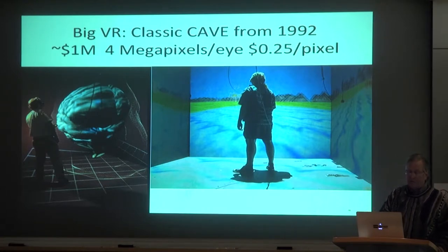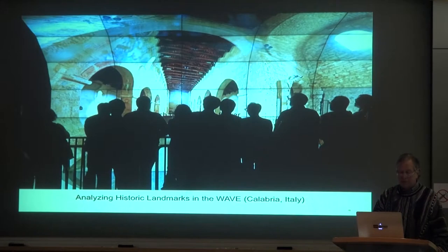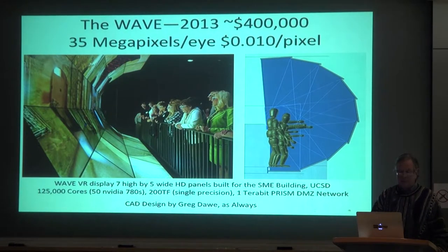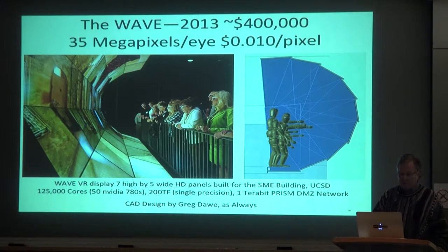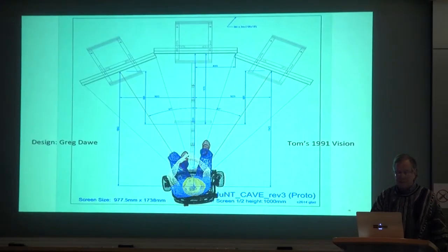This was the first CAVE we built — Larry had a lot to do with this too. The first one was in Chicago, the second in Urbana at NCSA, the third at Argonne, the fourth at DARPA. But it was expensive. What you're going to see later is the WAVE. We built it a couple of years ago — it's 35 megapixels per eye instead of one megapixel per eye, and instead of a dollar a pixel, it's a penny a pixel. Orders of magnitude improvement. This room also has a terabit network in it.